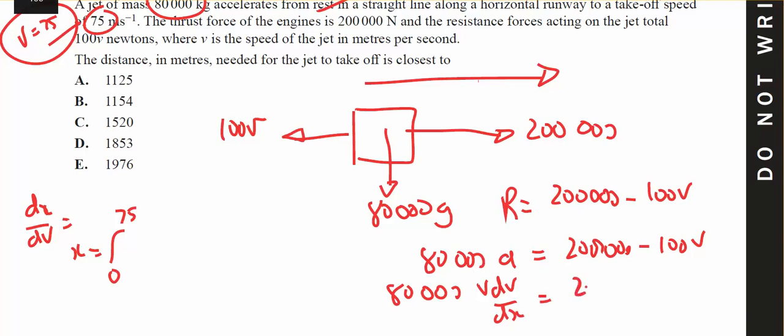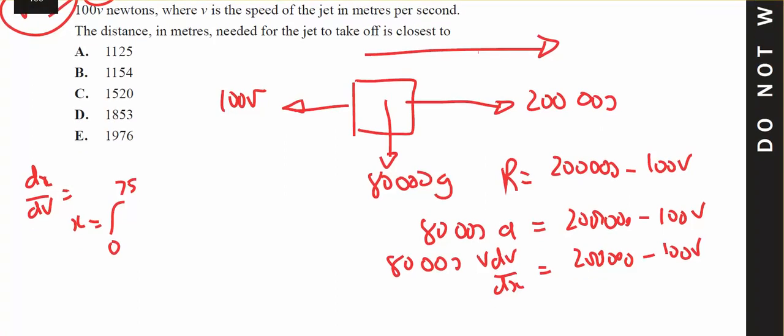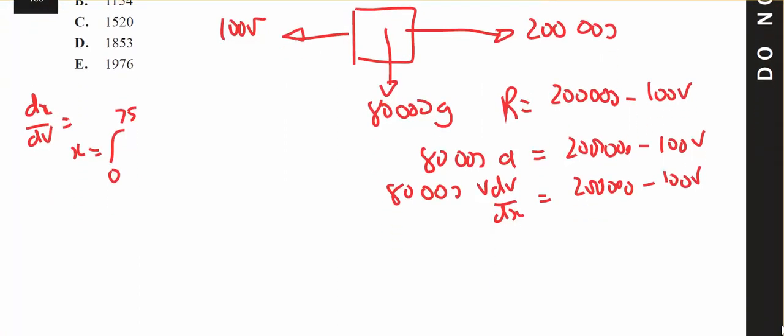I'm going to move that over, so I'm going to have dx/dv equals 200,000 minus 100v on top of 80,000v.